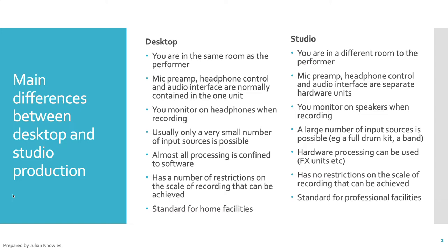In a recording studio we typically have a large number of inputs and outputs. In this case we have 32 inputs and outputs achieved by using two Avid HD I/O interfaces that are stacked — interface one handles inputs and outputs 1 to 16, and interface two handles inputs and outputs 17 to 32. These two audio interfaces operate in tandem and appear in software as 32 inputs and outputs. In practice we use 24 inputs and outputs for the mixing console and 8 outputs for the headphone system.